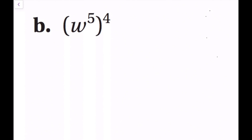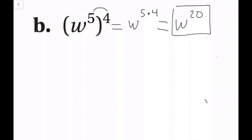For the second example, we have w to the fifth power, and that entire quantity is being taken to the fourth power. Using the power of a power property, we multiply 5 times 4 to get w to the 5 times 4 power, which equals w to the 20th power. This is simplified.